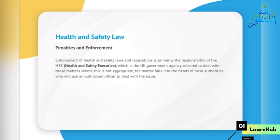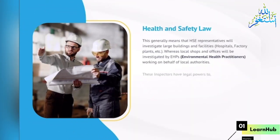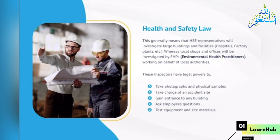Penalties and Enforcement. Enforcement of health and safety laws is primarily the responsibility of the HSE, Health and Safety Executive, the UK government agency selected to deal with those matters. Where this is not appropriate, the matter falls to local authorities who will use an authorised officer. HSE representatives will investigate large buildings and facilities, hospitals, factory plants, etc., whereas local shops and offices will be investigated by EHPs, environmental health practitioners, working on behalf of local authorities. These inspectors have legal powers to: take photographs and physical samples; take charge of an accident site; gain entrance to any building; ask employees questions; and test equipment and site materials.